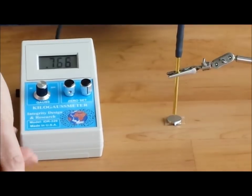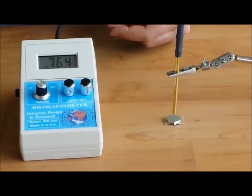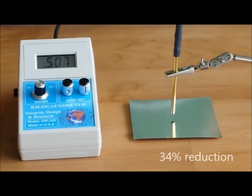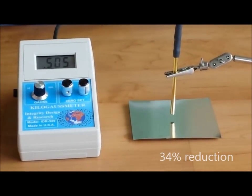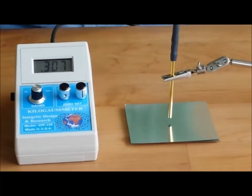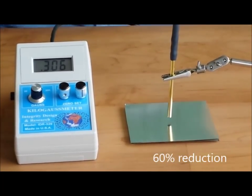Now if instead I use a larger piece, same material, same thickness, just a larger format, the one layer drops us to 505 with a second layer of magnet shield drops us to 306.